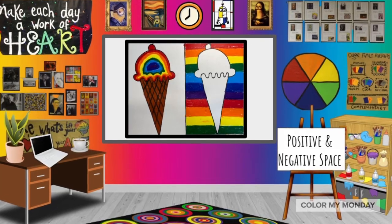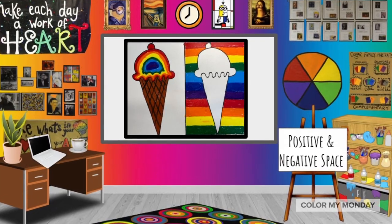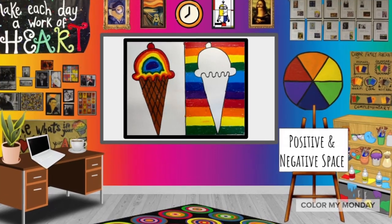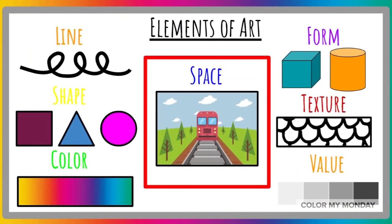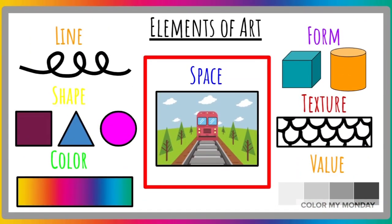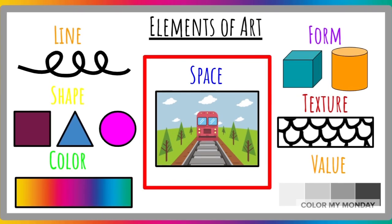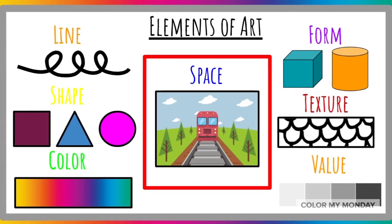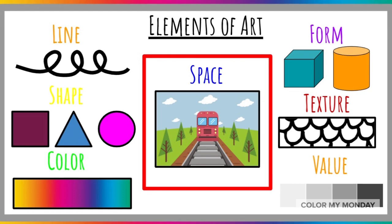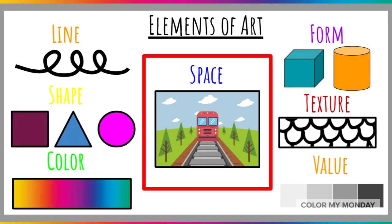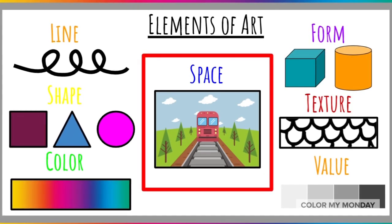Today, we'll talk about positive and negative space as it relates to art. Space is one of the seven elements of art. Those include lines, shape, color, form, texture, value, and of course, space.